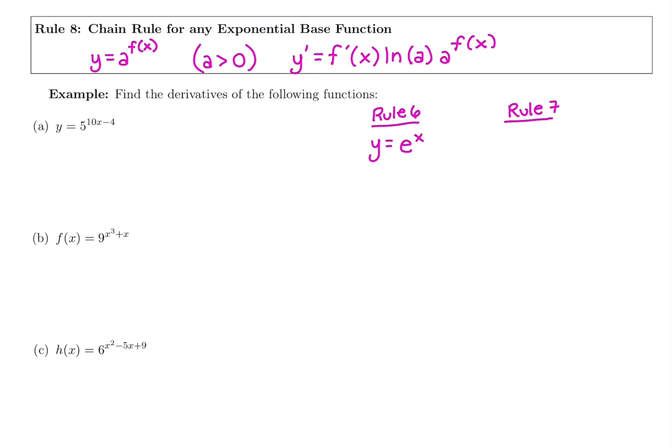Rule 6 says if you have a power that's more than just an x for base e, when you take the derivative, if you have e to the x cubed, you have to take the derivative of the power times e to the original power. That was rule 6.